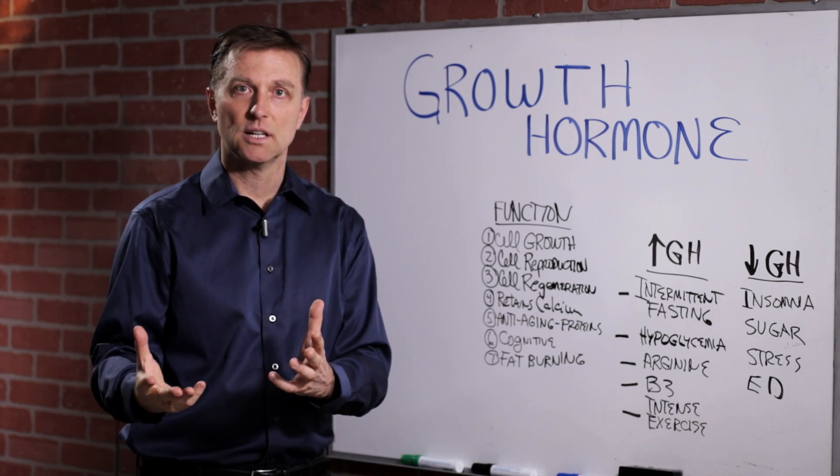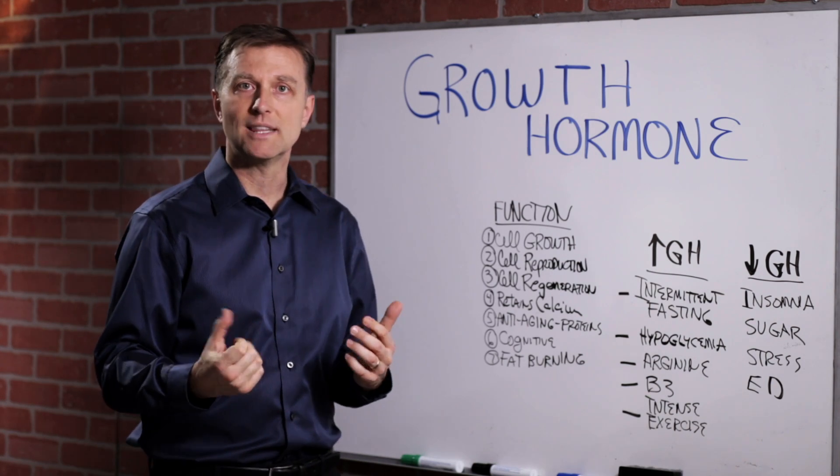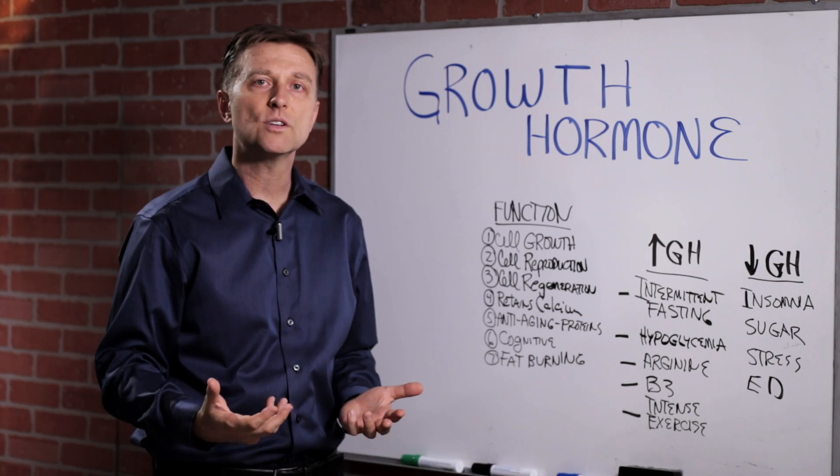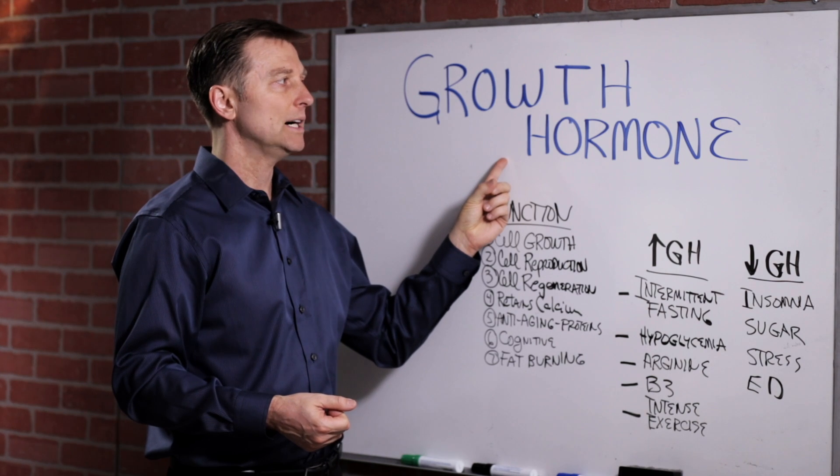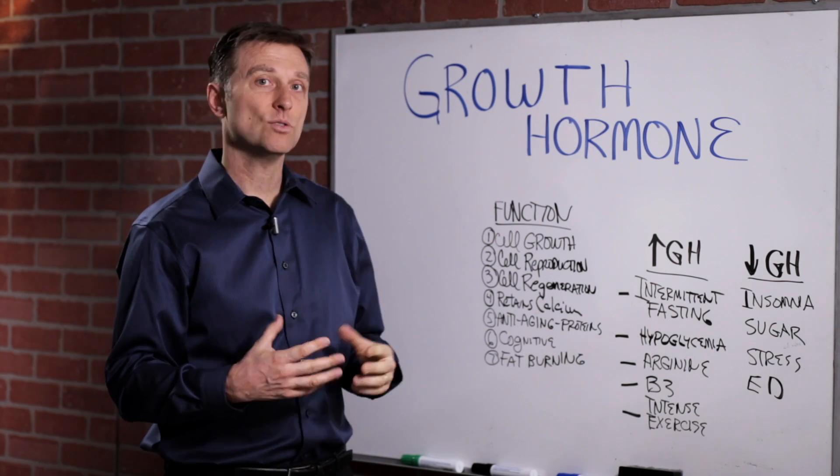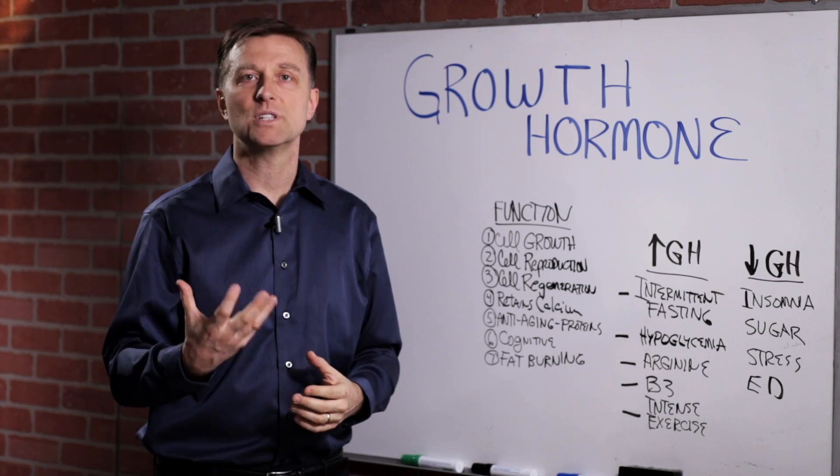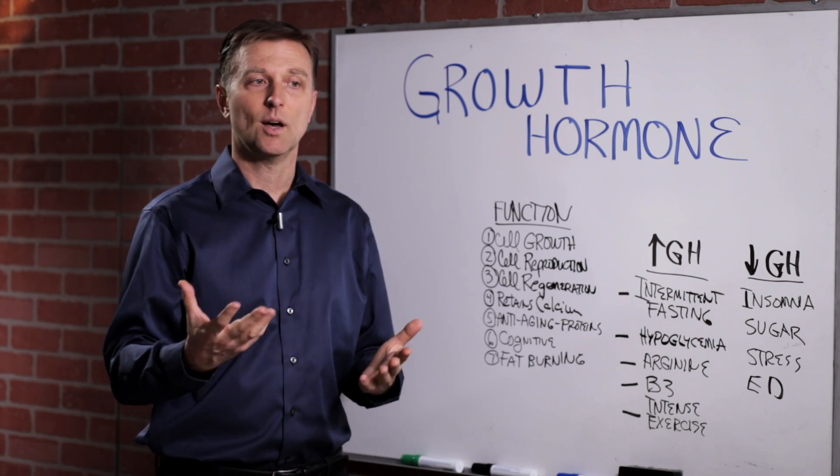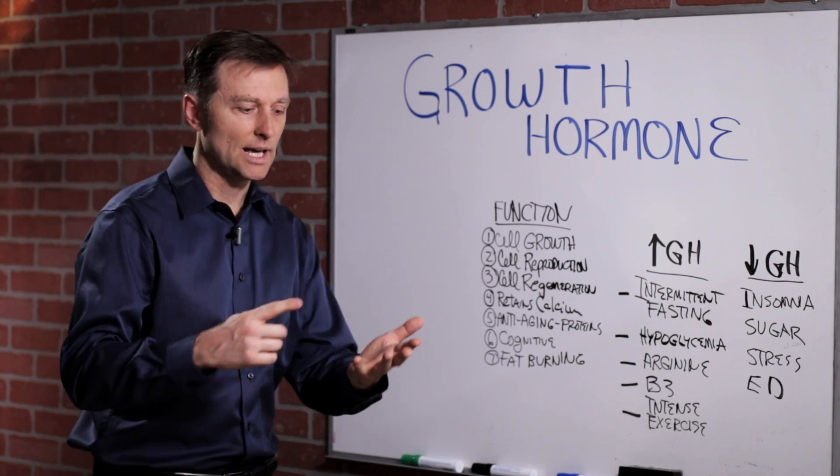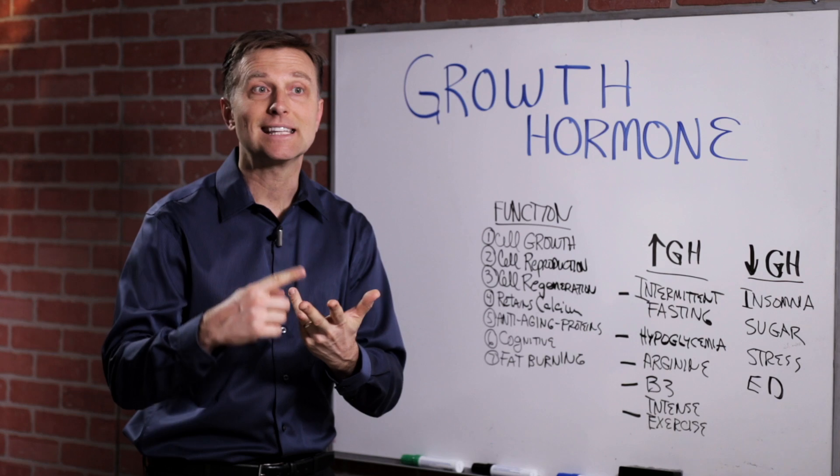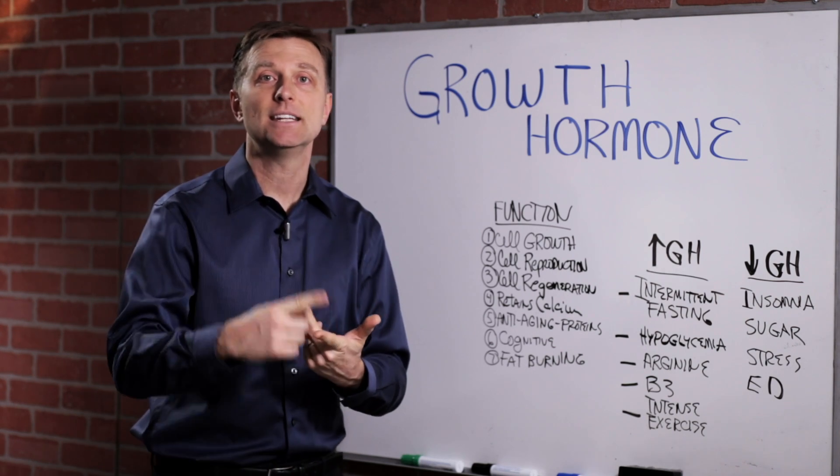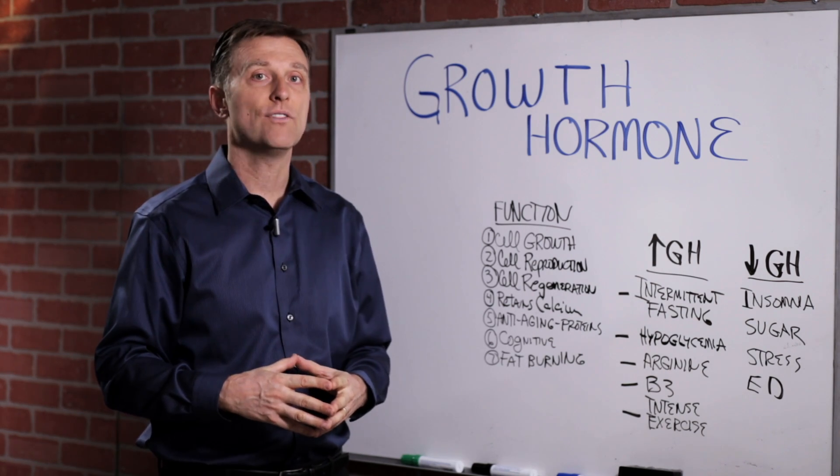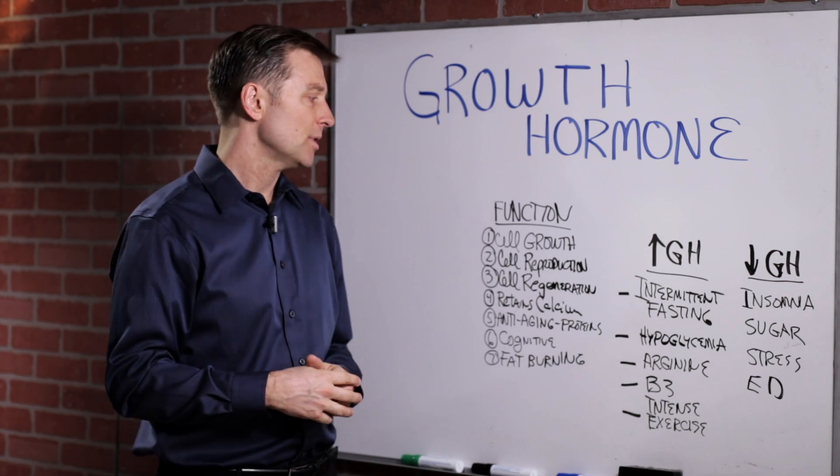Now, in a child, growth hormone is there to make you grow. But once you're an adult, it's used for other purposes, mainly to help preserve proteins. Now, the question is, what part of your body is protein? Well, you got hair, nails, skin, collagen, tendon, ligaments, even bone. You have a lot of your body protein.